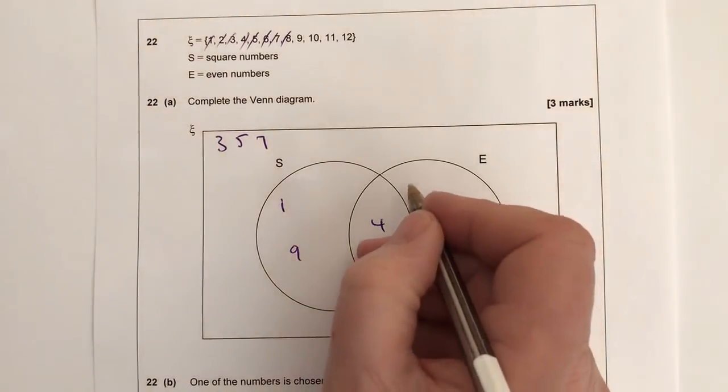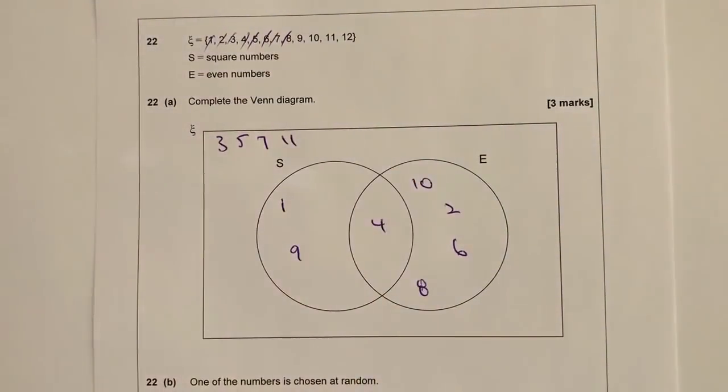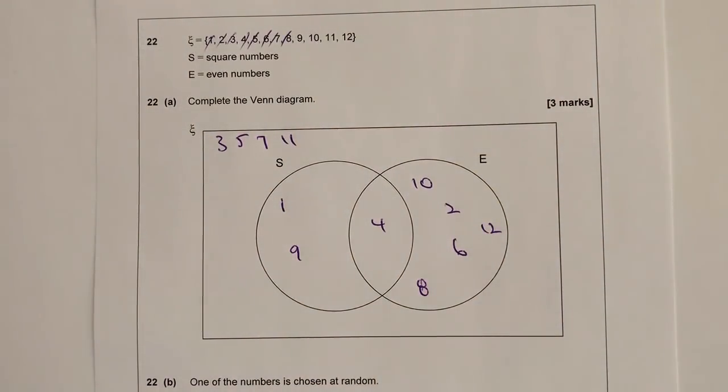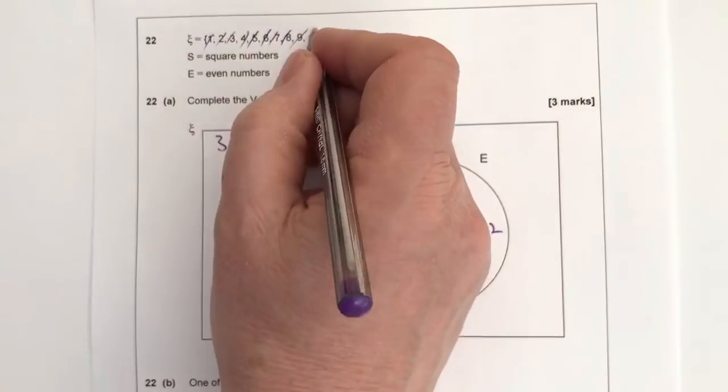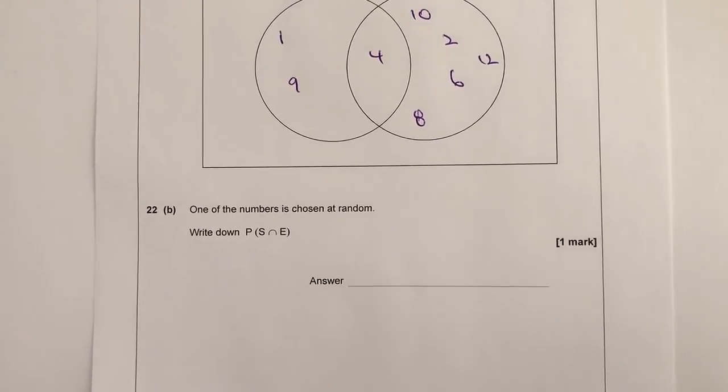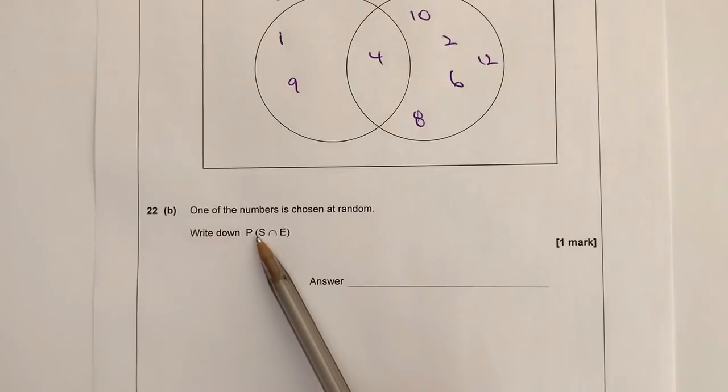10 is an even number. 11 is not square and not even, so that's going to sit outside, and 12 is an even number but it's not square. So that'll deal with 9, 10, 11, and 12. So that's the Venn diagram for you. And then it says one of the numbers is chosen at random. Write down the probability that it's square and even.